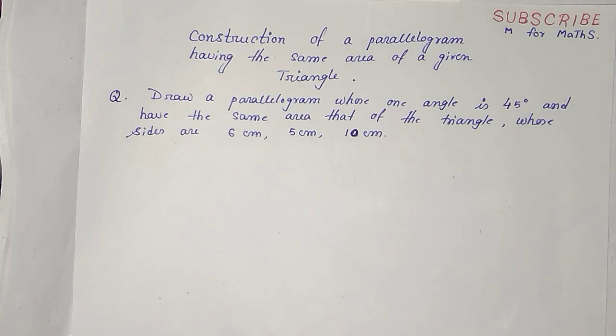To make you understand, I have taken a random question here, but you can pick any question from a book or make up your own by following the procedure I'm showing. I will draw a parallelogram whose one angle is 45 degrees and whose area is the same as a triangle with sides 6 centimeters, 5 centimeters, and 10 centimeters.